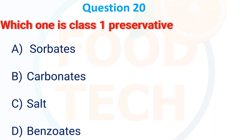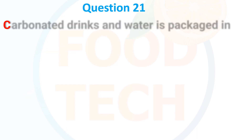Which one is a Class I preservative? A) sorbet, B) carbonate, C) salt, D) benzoate. The answer is C — salt.